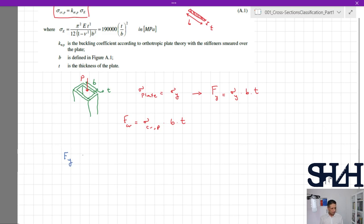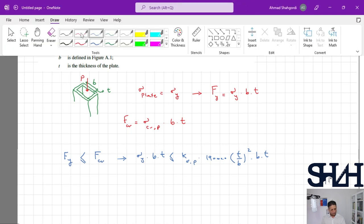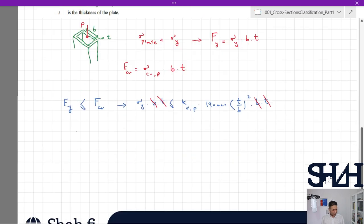It means that Fy needs to be less than F critical. In other words, we don't want the part to buckle before it behaves in a plastic manner. So sigma y times b times t should be less than k sigma p times 190,000 t over b squared times b times t. From here, if we simplify the equation, b and t are gone, and b over t squared should be less than k sigma p times 190,000.